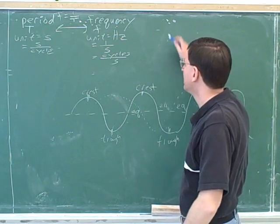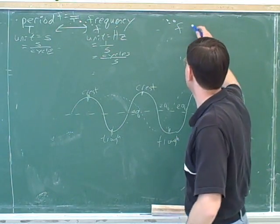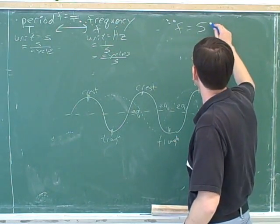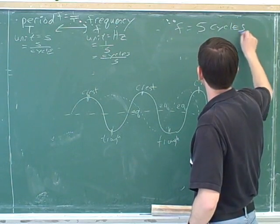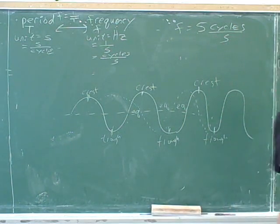Well, let's see if that's true. So let's say that the frequency is 5 cycles per second. See if you can interpret what that means. What does that tell us about this wave or this oscillation?